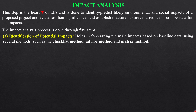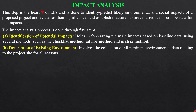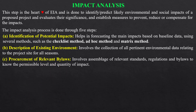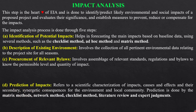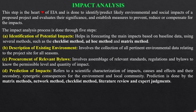Step one is identification of potential impacts using several methods such as the checklist method, ad hoc method, and matrix method. Step two, description of existing environment, involves the collection of all pertinent environmental data relating to the project site for all seasons. Step three, procurement of relevant bylaws, involves assembly of relevant standards, regulations, and bylaws to know the permissible level and quantity of impact. Step four, prediction of impacts, refers to the scientific characterization of impacts, causes and effects, and their secondary synergistic consequences for the environment and local community.